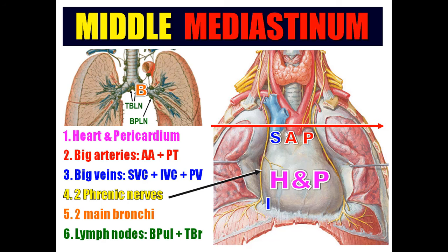To summarize the middle mediastinum: it contains heart and pericardium, two big arteries (ascending aorta and pulmonary trunk), three veins (lower part of superior vena cava, upper part of inferior vena cava, four pulmonary veins behind the heart entering the left atrium), two phrenic nerves, two main bronchi, bronchopulmonary lymph nodes at the hilum, and tracheobronchial lymph nodes.